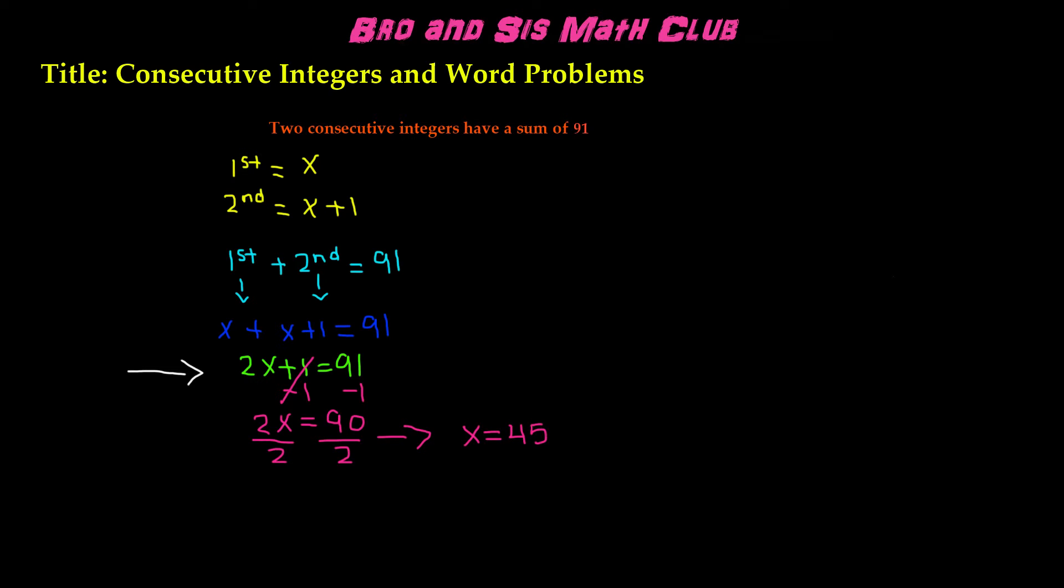Now we found the value of x, but we're not done yet, because we have to plug this back into the two consecutive integers that we had found, which was x and x plus 1. So 45 is going to be the first, and the second is going to be 45 plus 1, which is 46. This is the answer to this word problem. The two consecutive integers that have a sum of 91 are 45 and 46.